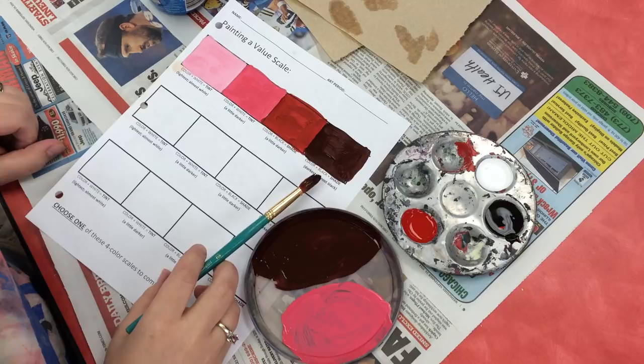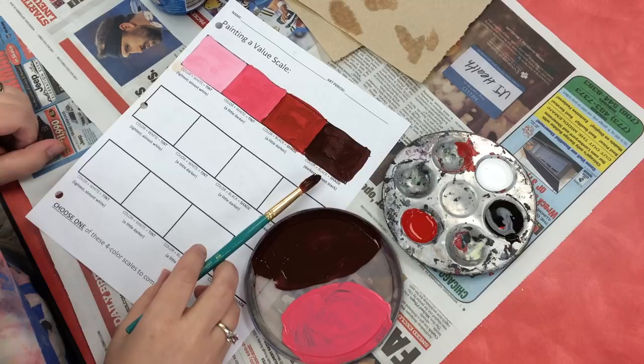There's my value scale of four distinct colors. Again, if you were going to do more colors, you would probably want to be even lighter over here, or even darker over here, and you would add more or less white or black, depending on the tints or the shades that you're mixing.